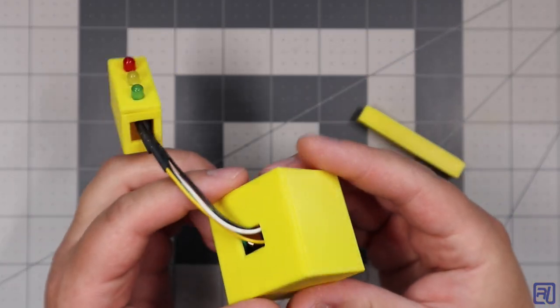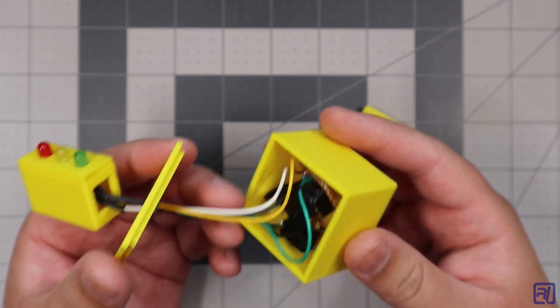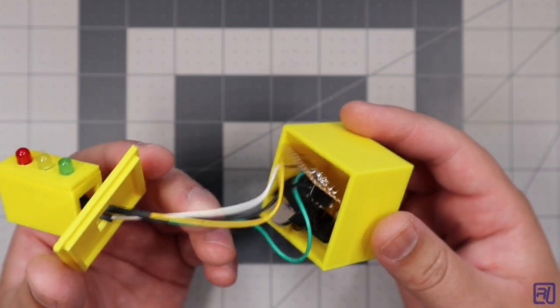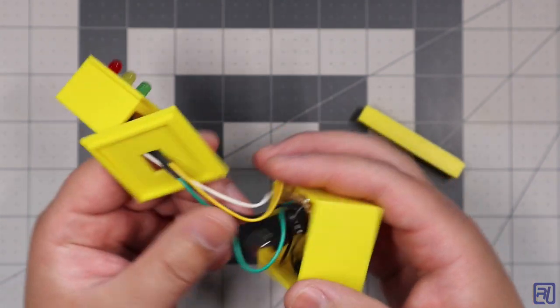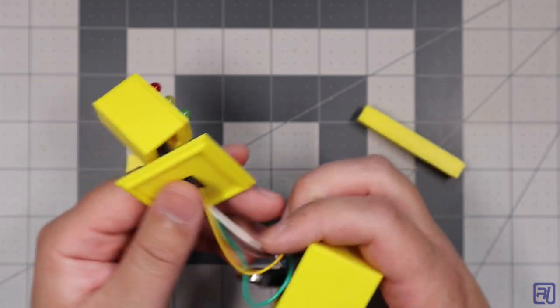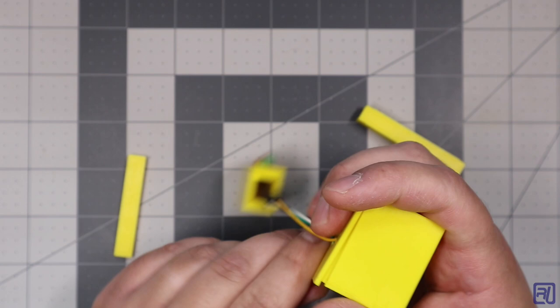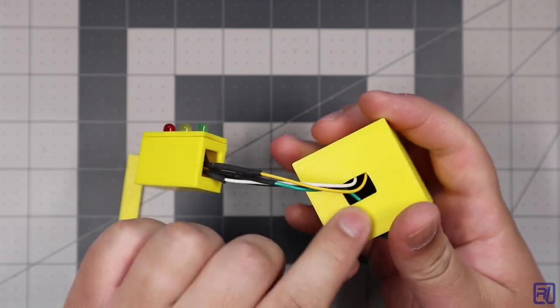The base holds the power button, the battery, and all the electronic components that make up the circuit. The top is removable so you can change the battery and the middle section snaps into place through a hole in the top.